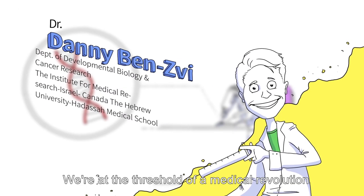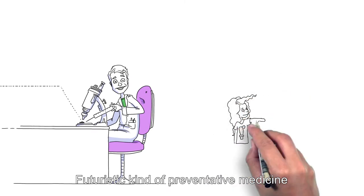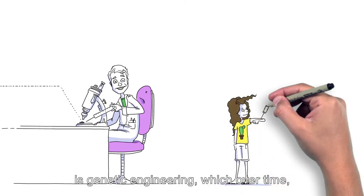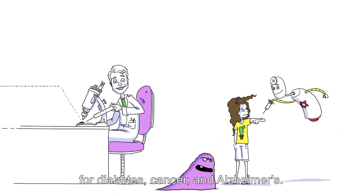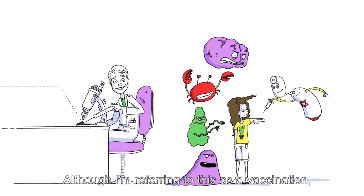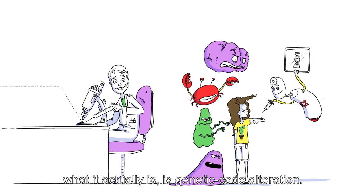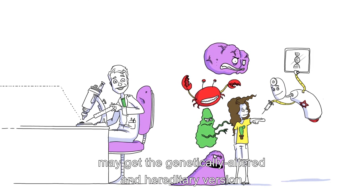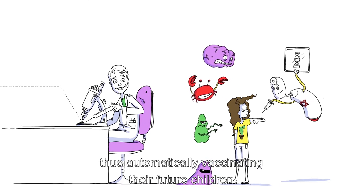We're at the threshold of a medical revolution. The futuristic kind of preventative medicine is genetic engineering, which over time will become increasingly common. People will receive vaccinations for diabetes, cancer and Alzheimer's. Although I'm referring to this as a vaccination, what it actually is, is genetic code alteration. Whoever chooses may get the genetically altered and hereditary version, thus automatically vaccinating their future children.